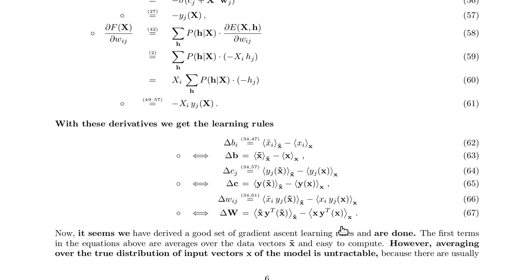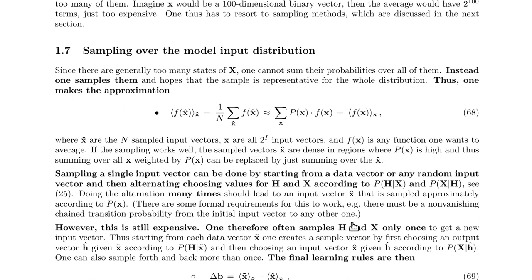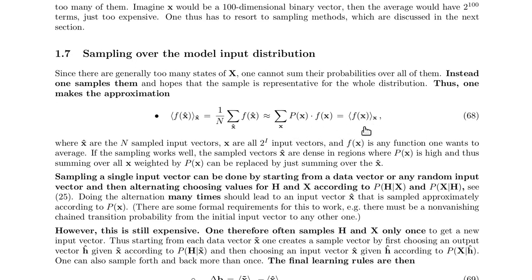One way to do this is to sample from the model. Rather than really going through all values and weighting them by their probability, we simply sample from the model and then take the average over these samples. The true average means going over all 2^100 values weighted by p(x). But if we can sample from the model, we can replace this by an empirical mean: 1/n times the sum over all sample values that we have.